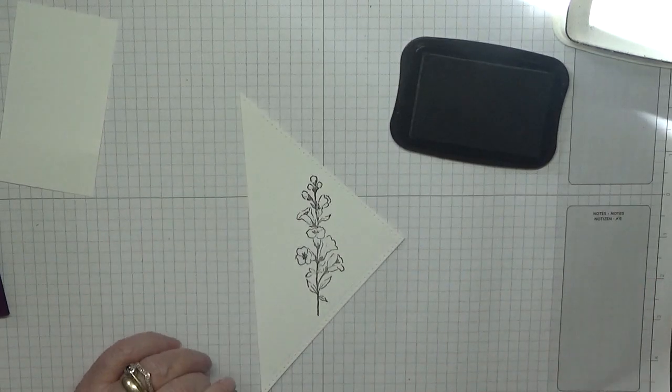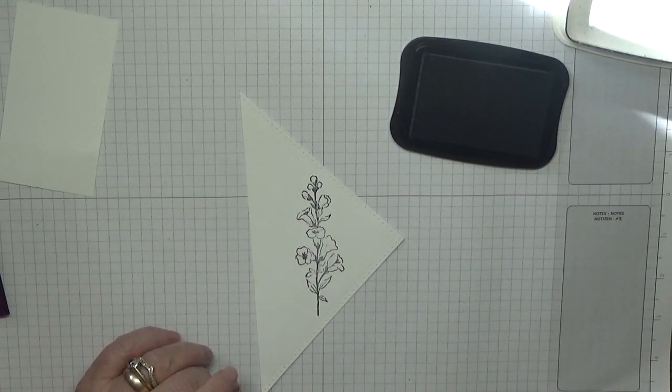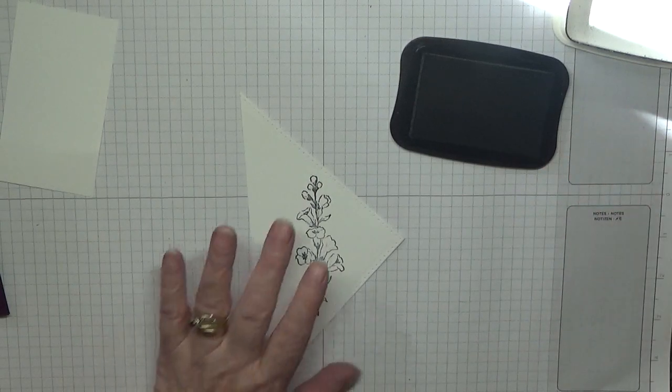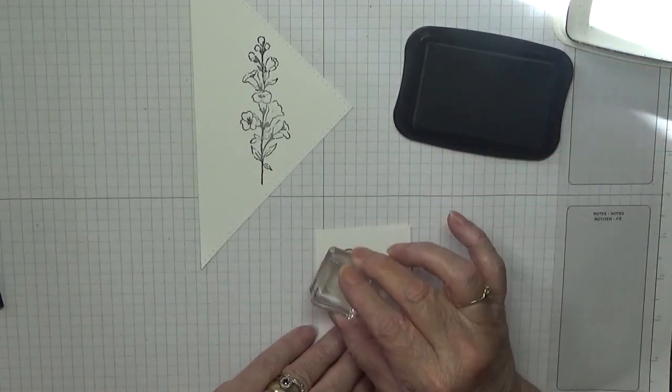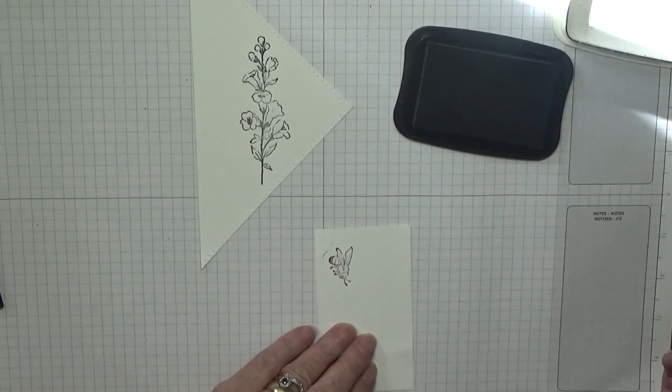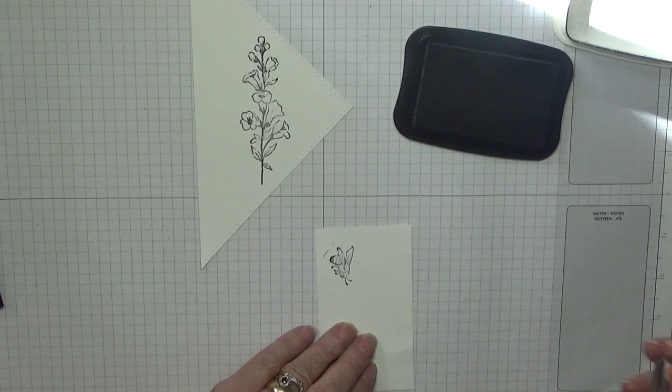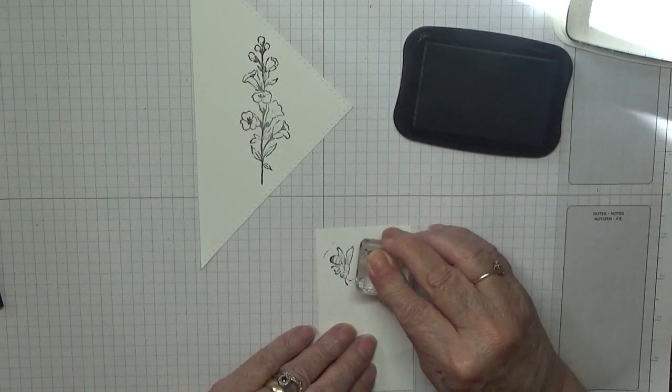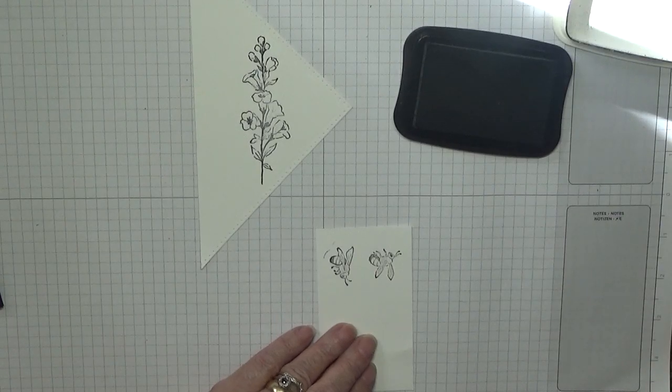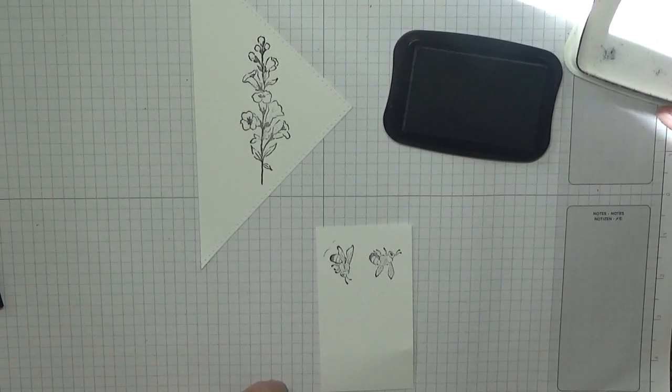It's quite nice. Then we want to stamp our two bees. There's one—I'm not worried about the over-stamping. We'll cut them out using the dies.